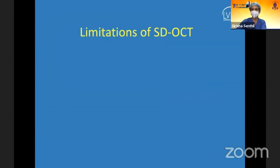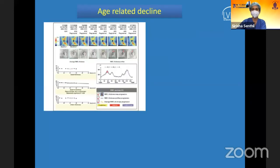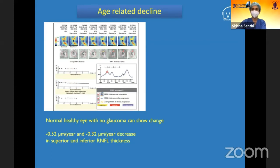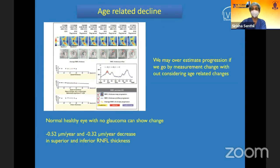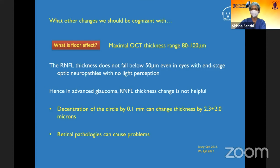We must understand the limitations of any testing technology: registration errors, coexisting retinal pathologies, operator errors, segmentation errors, and age-related changes. Age-related decline is important — OCT currently does not account for it before calling someone a progressor, so we may overestimate disease. The floor effect occurs when RNFL thickness falls below ~55 microns; non-neural tissue prevents further measurable decrease. Circle decentration and retinal pathologies also cause problems in advanced glaucoma.